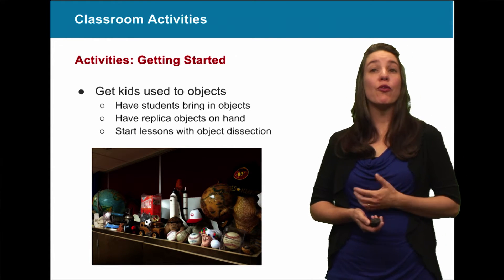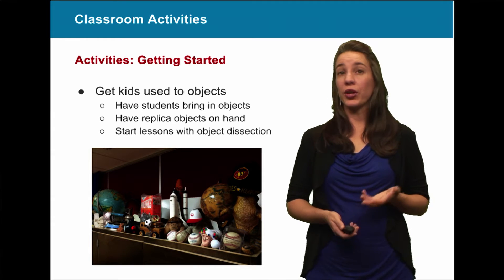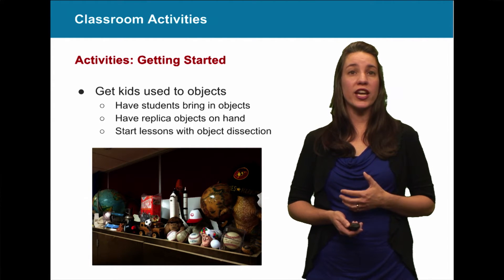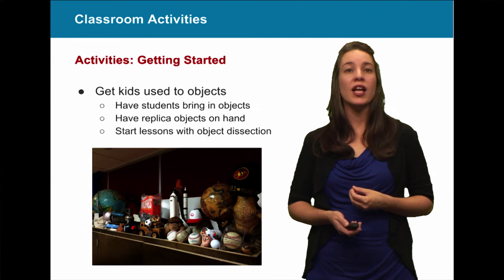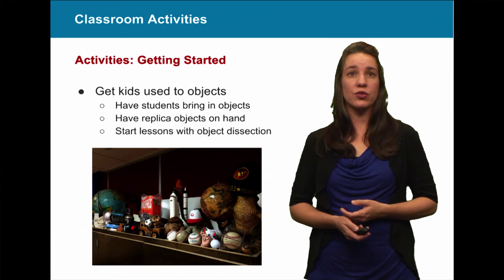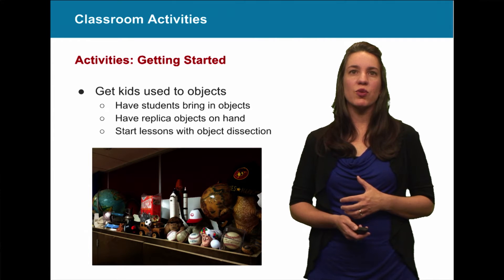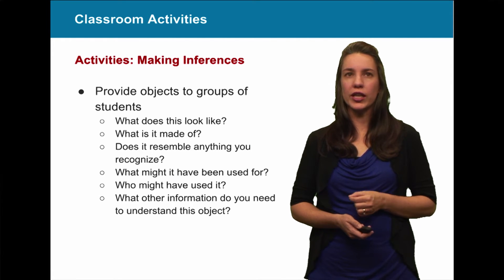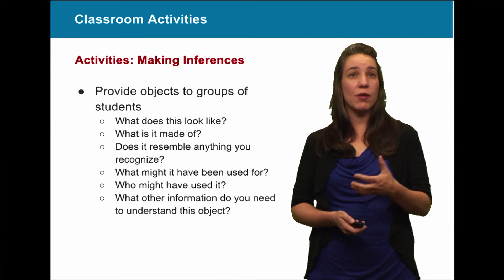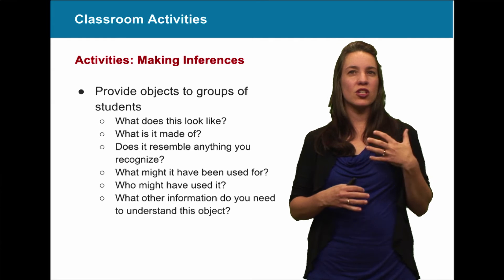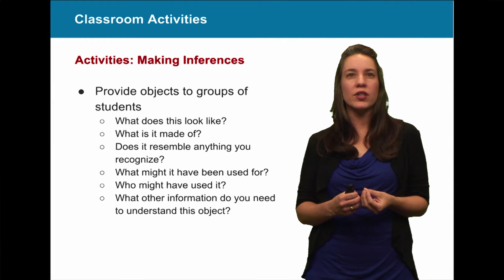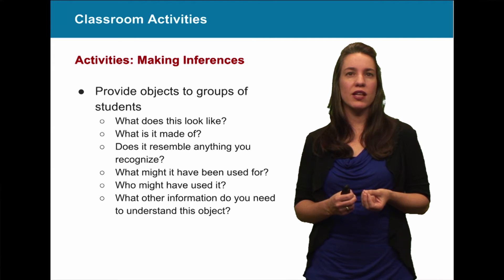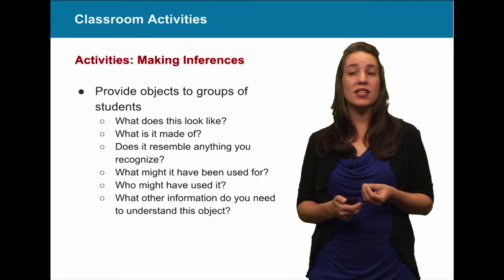So how do we get started in classrooms? First, get kids used to seeing objects. Have students bring in objects of their own. One middle school teacher from Minnesota has students bring in an object from home that means something to them the first week of school, creating a classroom museum that lives around them all year. Have replica objects on hand, or start lessons with an object dissection. Provide objects to groups without telling them much about it — let them look and ask: what does it look like, what is it made of, does it look like anything you recognize, what was it used for, who used it, and what other information do you need to understand it?